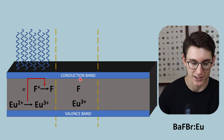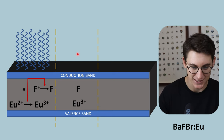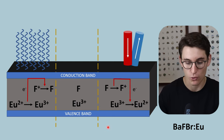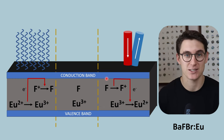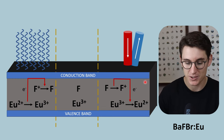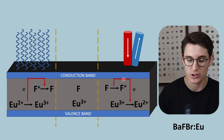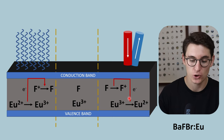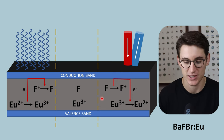Now we've created our latent image. The dotted lines represent three different periods in time: acquiring the x-ray, latent image formation, and then processing that x-ray. This can happen at any stage once we bring the cassette to our CR reader. This process can also be reversed — we can release an electron from our F-centers by giving energy into the system, and those electrons can drop down to a lower energy state and release energy.